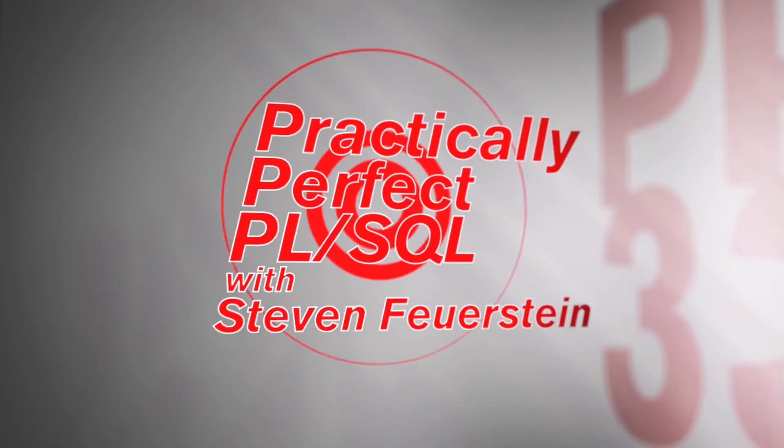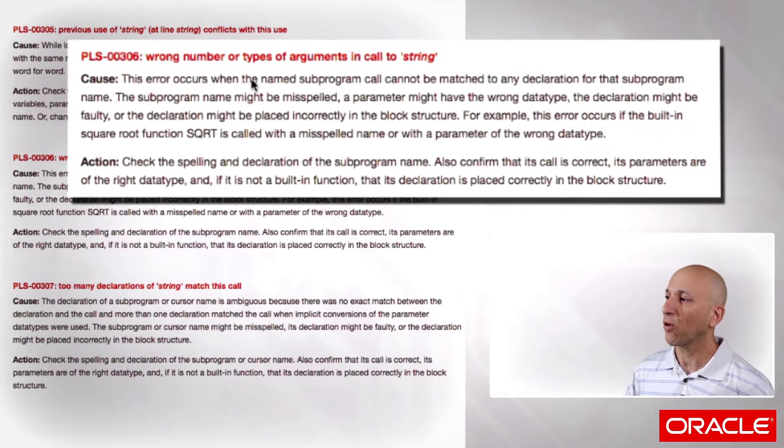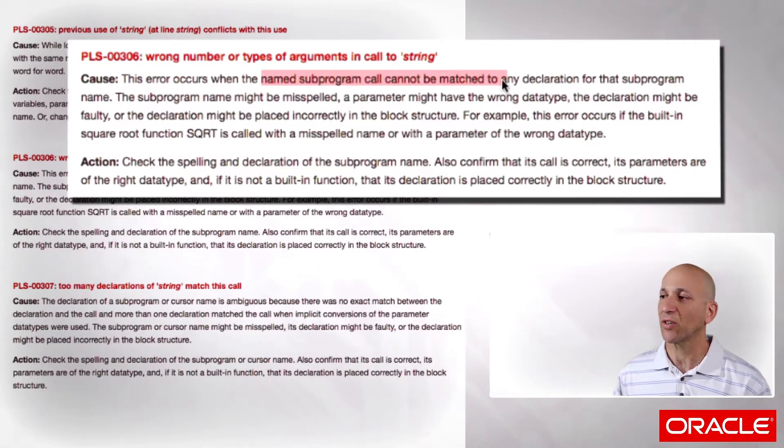Hi, I'm Stephen Feuerstein and I write practically perfect PL/SQL. Let's take a look at one of the most frustrating errors that PL/SQL developers encounter on compile time: PLS-306, wrong number or types of arguments in the call to a certain subprogram. As the Oracle error messages document says, this error occurs when the name subprogram call cannot be matched to any declaration for that subprogram name.